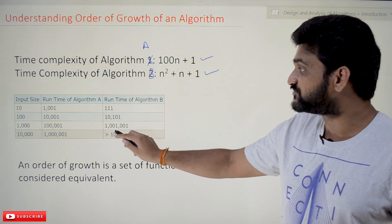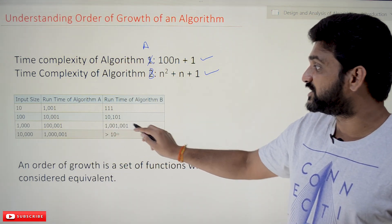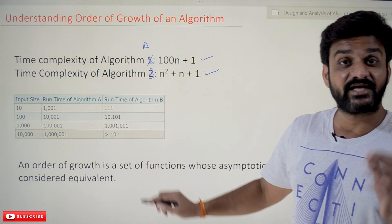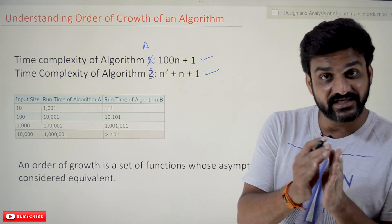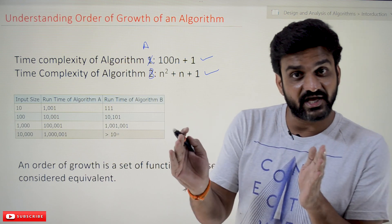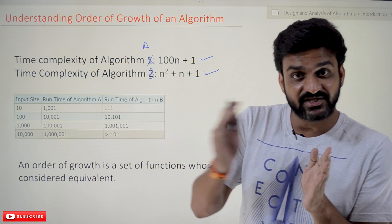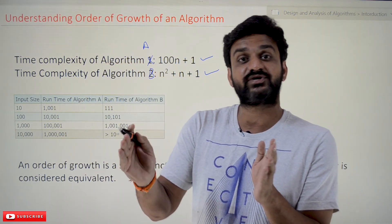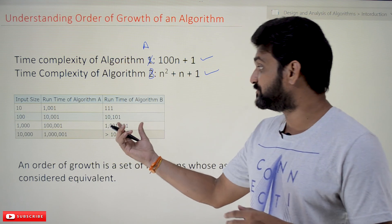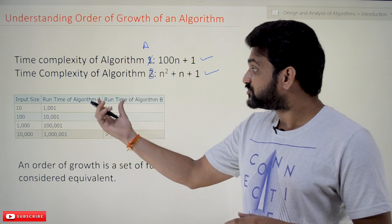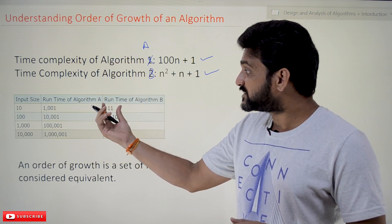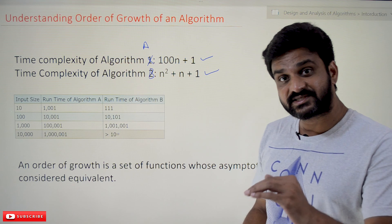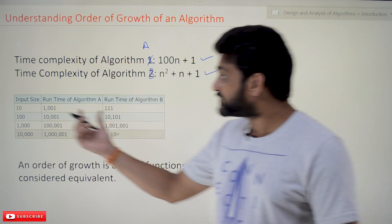For input size 1000, you can see there is a drastic change in the efficiency — a drastic change in the number of steps executed by algorithm B. So from here, where the run time of algorithm B was very less compared with algorithm A when the input size was small, now things are changing.